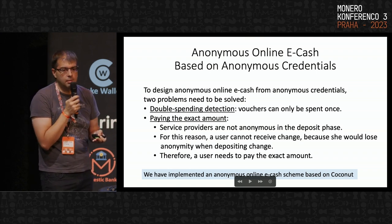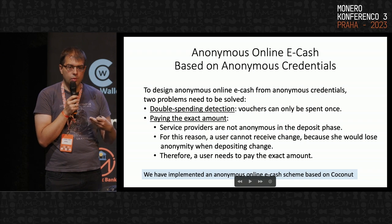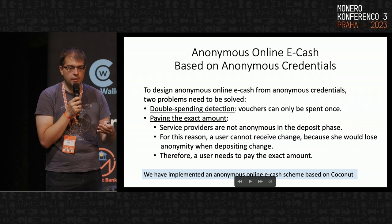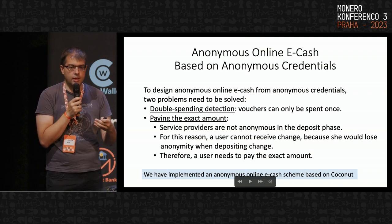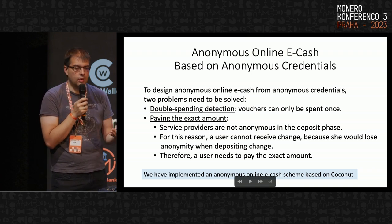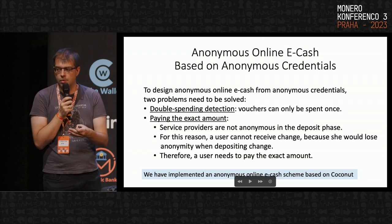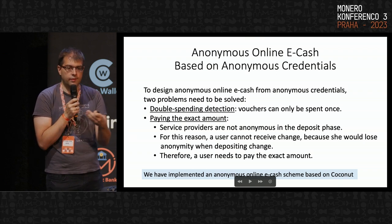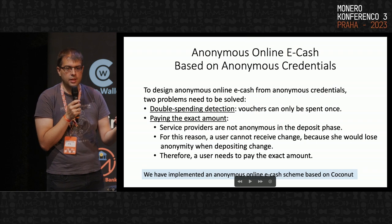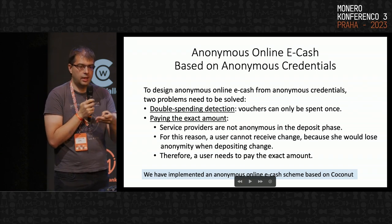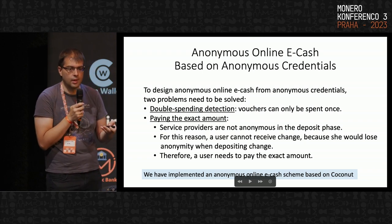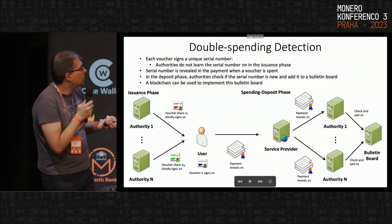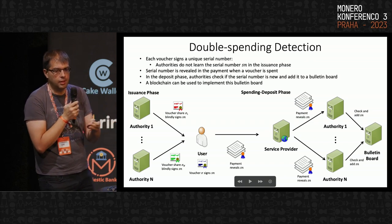There is also the problem of paying the exact amount. In anonymous eCash, if we want to exchange our eCash for a non-privacy-preserving cryptocurrency or fiat currency, the deposit phase is not anonymous — we lose anonymity when converting. Therefore, the service provider cannot give change, because the user would need to deposit that change and lose anonymity. The user must be able to pay the exact amount. This constraint applies only when converting to a fiat or non-privacy-preserving currency; if converting back to eCash, it could be done anonymously.